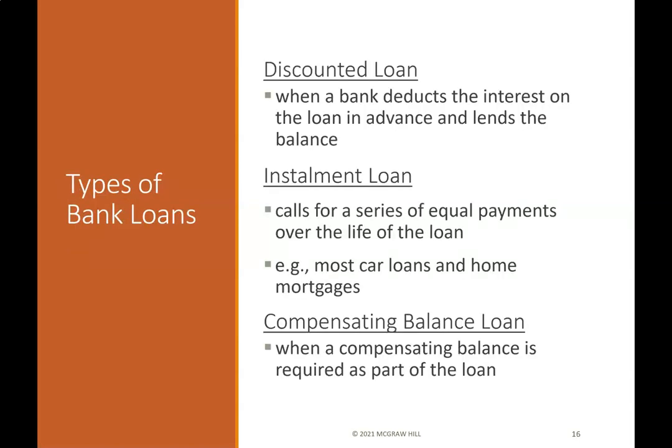Types of bank loans: A discounted loan is when a bank deducts the interest on the loan in advance and lends the balance. An installment loan calls for a series of equal payments over the life of the loan — for example, most car loans and home mortgages. A compensating balance loan is when a compensating balance is required as part of the loan.